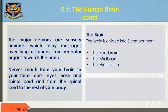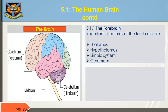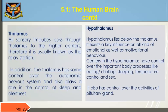The brain is divided into three compartments: the forebrain, the midbrain, and the hindbrain. Important structures of the forebrain are the thalamus, hypothalamus, limbic system, and cerebrum. All sensory impulses pass through the thalamus to the higher centers; therefore, it is usually known as the relay station. In addition, the thalamus has some control over the autonomic nervous system and also plays a role in the control of sleep and alertness.